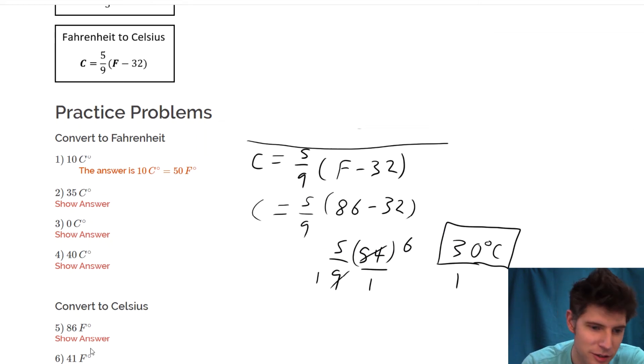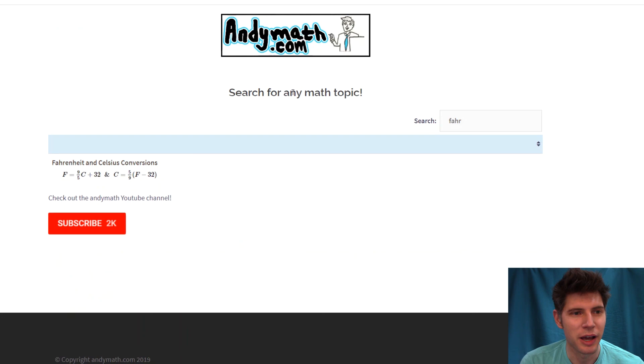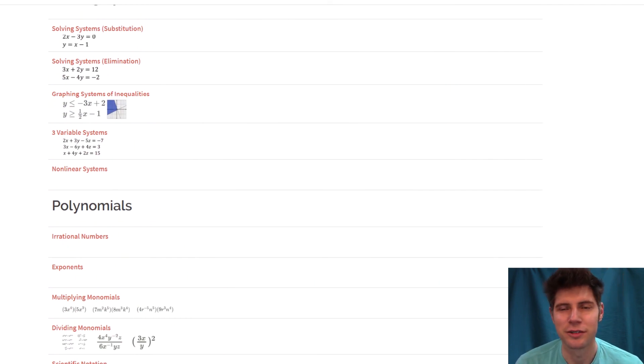We can check it: 30 degrees Celsius. So if this makes sense, this is how to convert Fahrenheit to Celsius and Celsius to Fahrenheit. Check out andymath.com if you're studying anything else. Lots of material. Please like and subscribe. I'll talk to you guys soon. Bye.